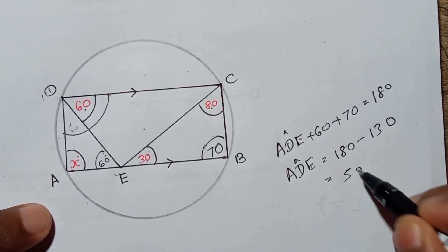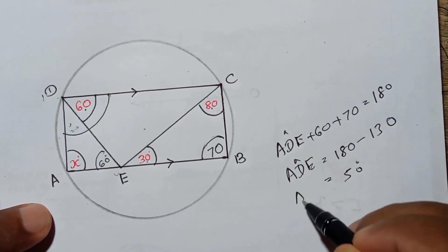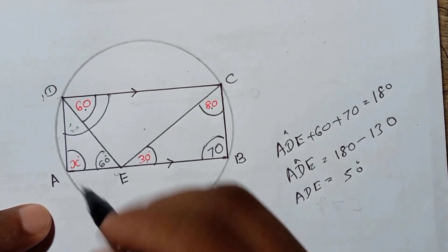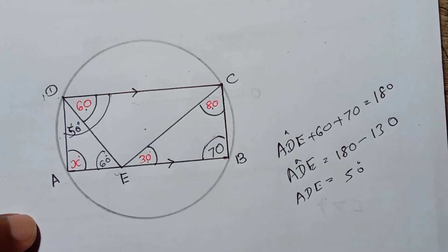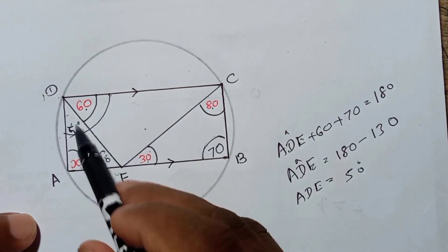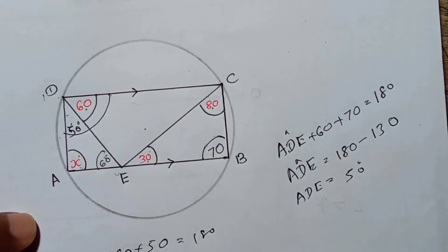So angle ADE will be 50 degrees, that means this is 50. Now you can find x easily, because x plus 60 plus 50 should be 180 again, because this is the interior angle of the triangle. So from 180 subtract 110, so x will be 70 degrees.